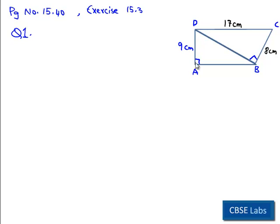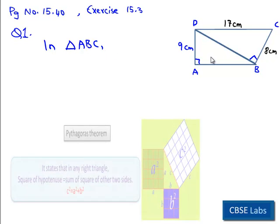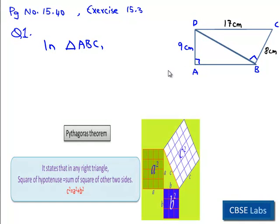Now we find side length AB of triangle ABD. Therefore, we consider in right angle triangle ABD, right angle at A. We know that by Pythagoras theorem, square of hypotenuse, which is BD square, is equal to sum of the squares of other two sides, which is AD square plus AB square.